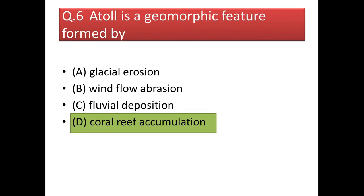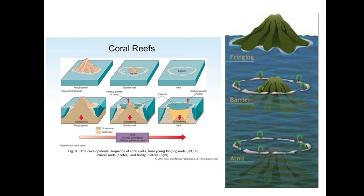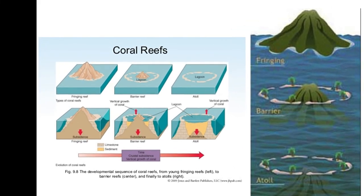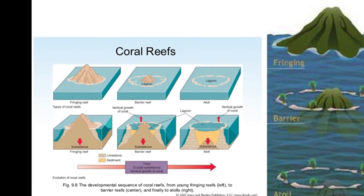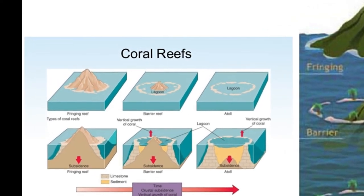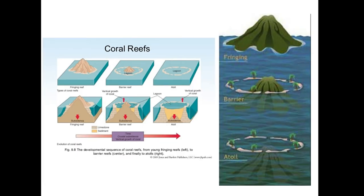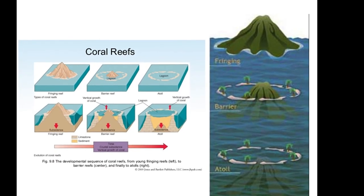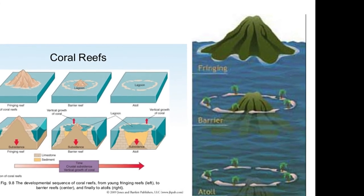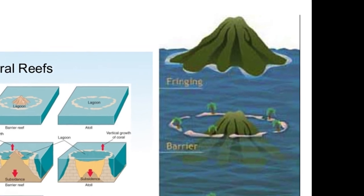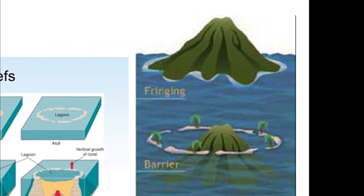Next question: an atoll is a geomorphic feature produced by? The answer is it is formed by coral reef accumulation. There are three types of coral reef: fringing reef, barrier reef, and atoll. When there is a volcanic eruption in the ocean and the erupted magma cools down, it forms an island, and if given suitable conditions, corals begin to accumulate all around it — that is called a fringing reef.